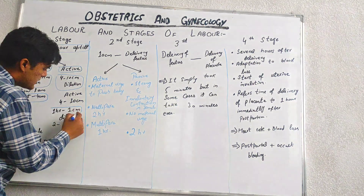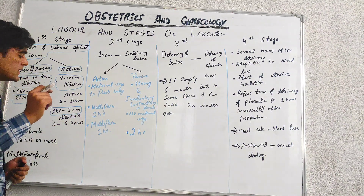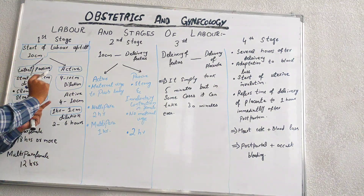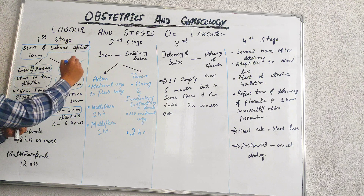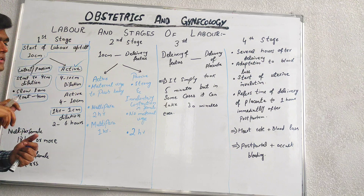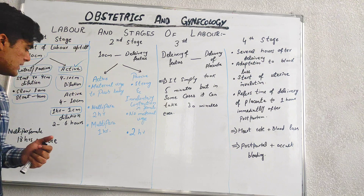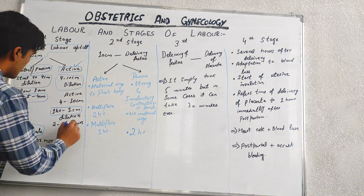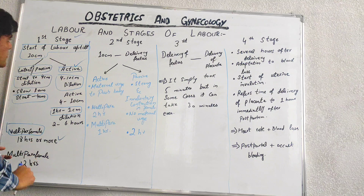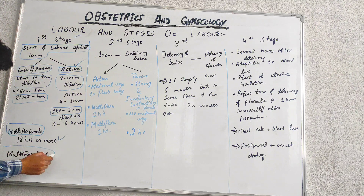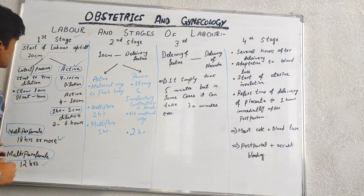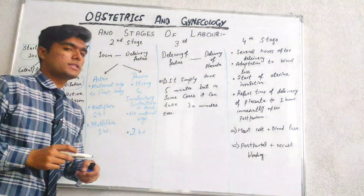In the active phase, there is approximately one centimetre dilation per hour, and the entire active dilation of the first stage completes in 2 to 6 hours. In the case of a nulliparous female, it takes 18 hours or more to complete the first stage of labour, and in the case of a multiparous female, it takes 12 hours to complete the first stage of labour.